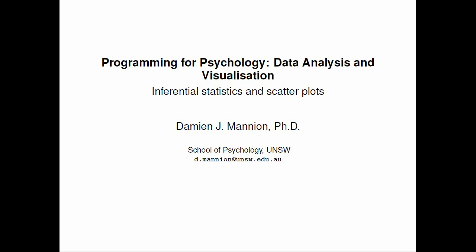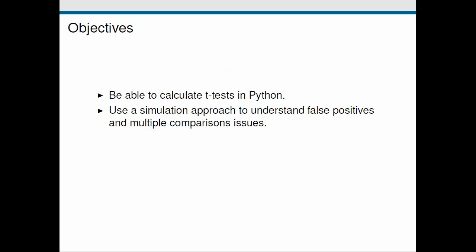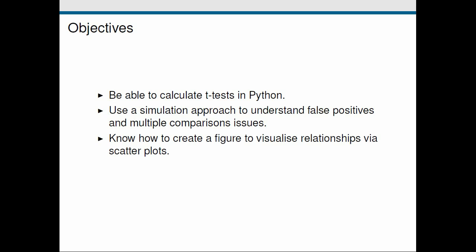Hi and welcome to the next in this series of screencasts on programming for psychology, data analysis and visualization. In this screencast we're going to be looking at calculating inferential statistics and how we can make some scatter plots. The objectives are: to calculate t-tests in Python, to use a simulation approach to understand false positives and multiple comparisons, to create scatter plots to visualize relationships, and to evaluate correlations in Python.